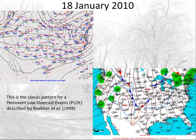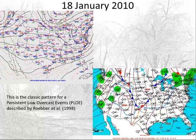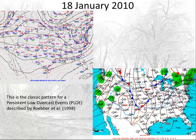Here's a case from South Dakota and North Dakota, January 18th through 24th, 2010 — thanks to Mike Fall and Josh Sheck for information on the case. This is a classic pattern for a persistent low overcast event described by Roeber et al. 1998. Starting on the 18th, a wave crosses the U.S.-Canadian border with high pressure across the eastern Dakotas and western Minnesota. Winds are near calm across the eastern Dakotas, allowing fog to begin forming.